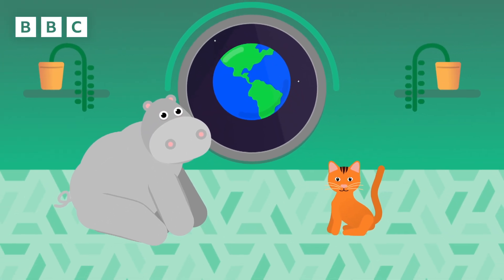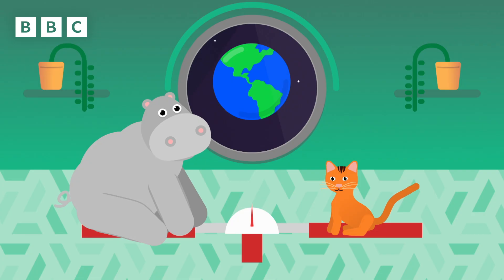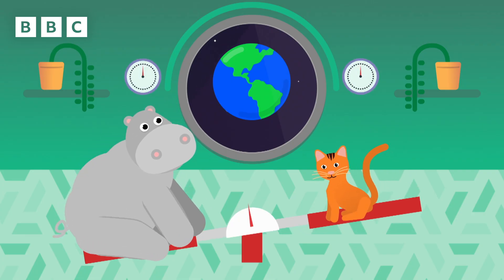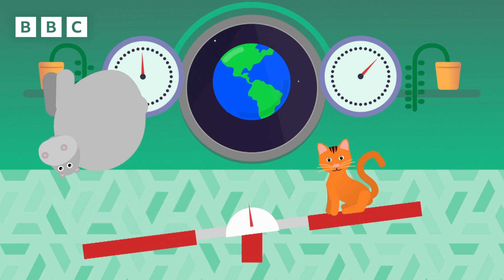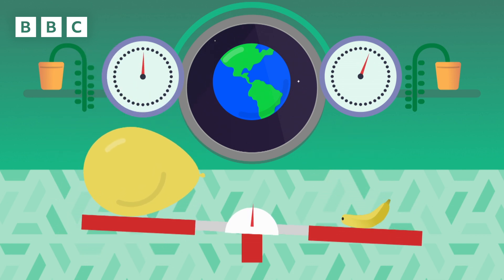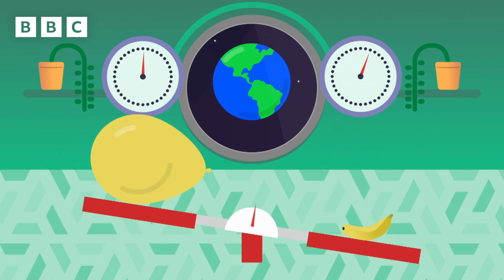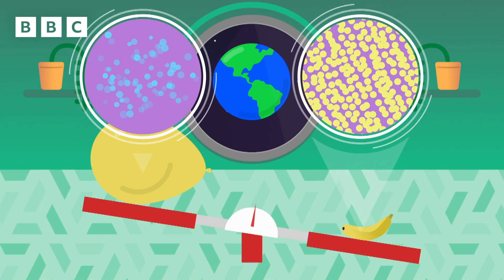Scientists use the term mass to measure exactly how heavy or light an object is. You might think bigger objects are heavier and have a bigger mass than smaller ones because they're bigger in size. Like this balloon and this banana, for instance. The balloon is full of air, so it actually has less mass than the banana.